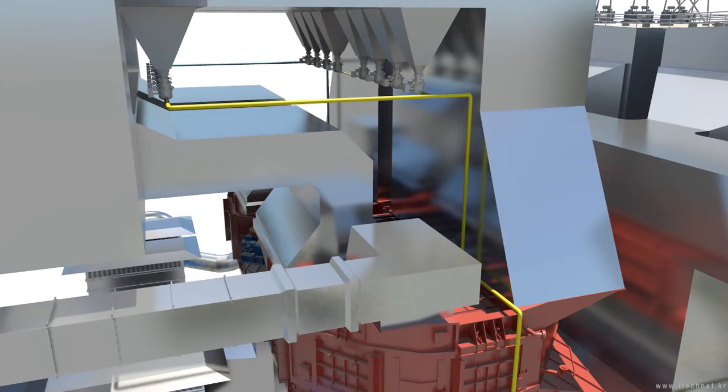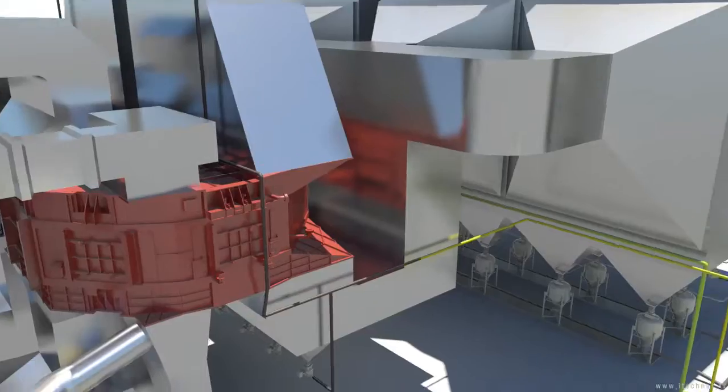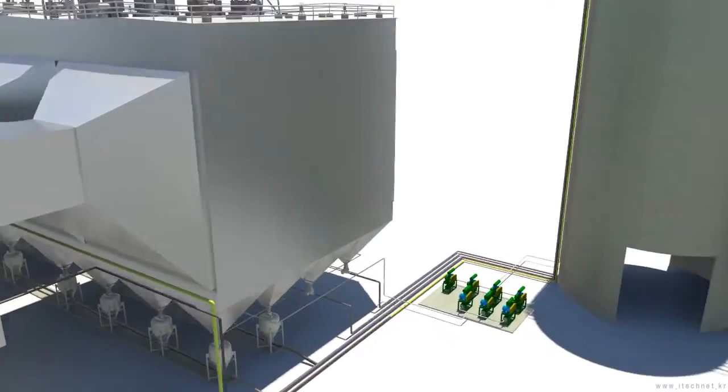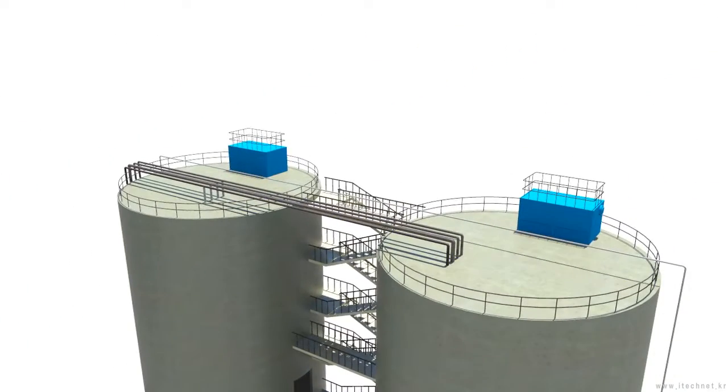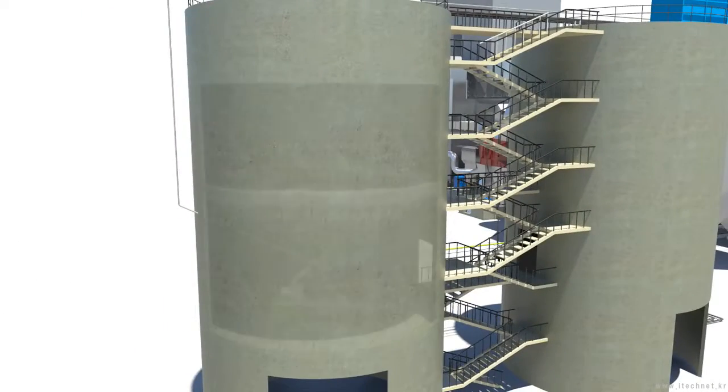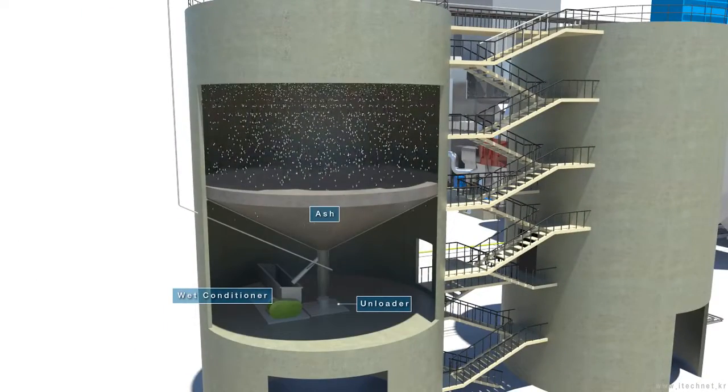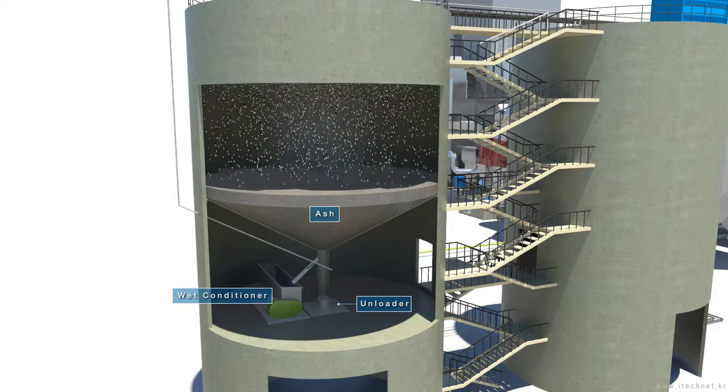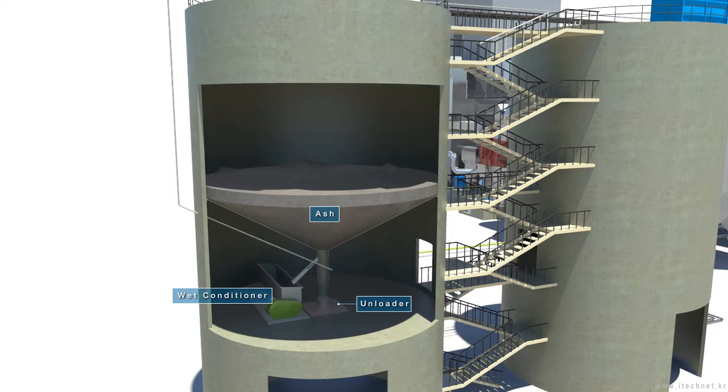The economizer ash and air preheater ash are sent to the ash silo by using the compressed air. The ash which is transferred from every system is stored at the ash silo and some of them are used as cement materials after making dried ash at the dry unloader after being delivered by trucks. Some of them are carried out after making wet ash which is mixed with service water at the wet conditioner.